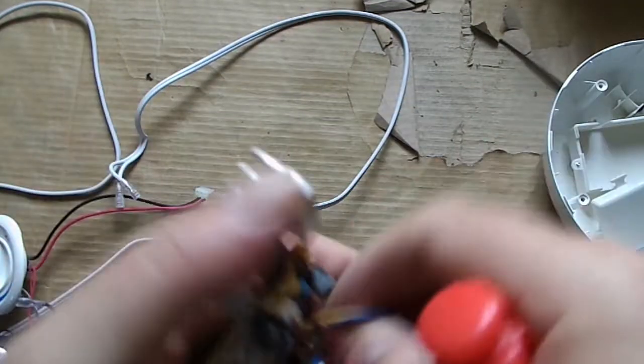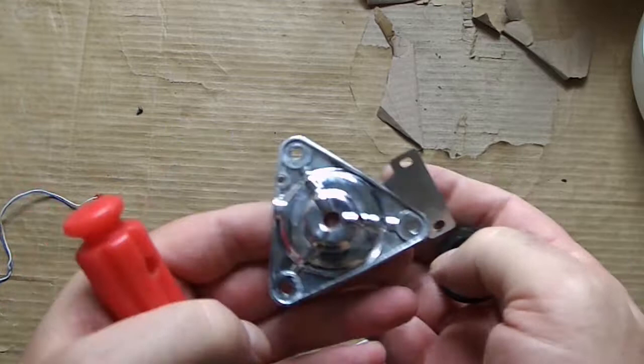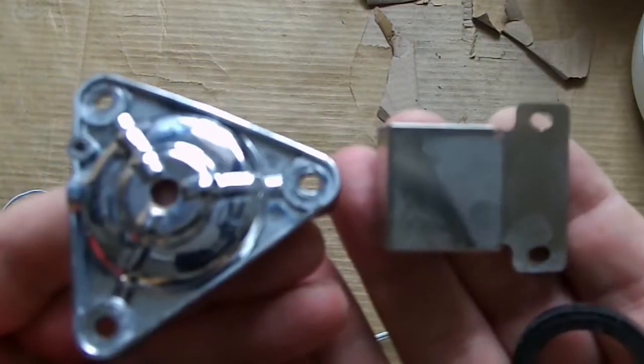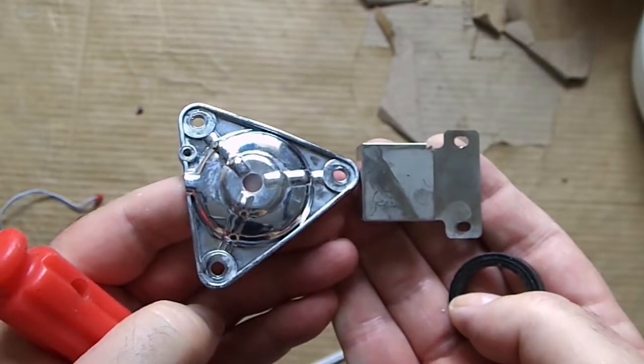I'm just going to save the heat sinks and connectors. And maybe the metal cover, too. Might use that in jewelry. The rubber gasket might be good for padding or a standoff. And the triangle, maybe a sci-fi badge prop.